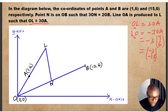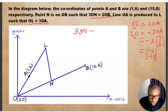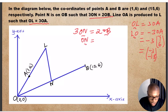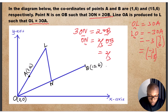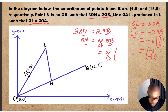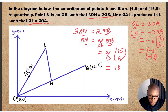Now for ON, we use the ratio 3ON equals 2OB. Dividing both sides by 3, ON equals (2/3)OB. We already have OB — B is (15, 6). So (2/3) times (15, 6) gives: (2/3)×15 = 10, and (2/3)×6 = 4. So ON equals (10, 4).